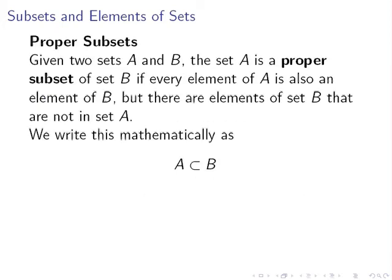A proper subset: if we have two sets A and B, the set A is a proper subset of set B if every element of A is also an element of B, but there are elements of set B that are not in set A. We write that mathematically as: A is a proper subset of B.